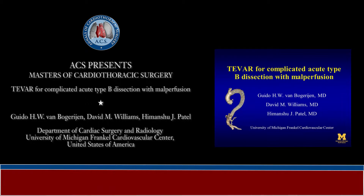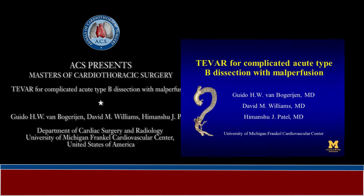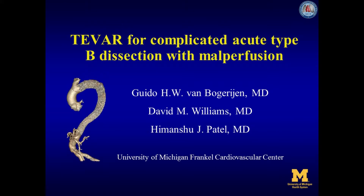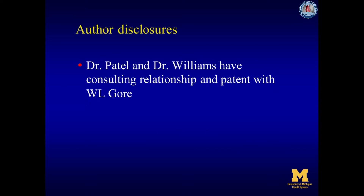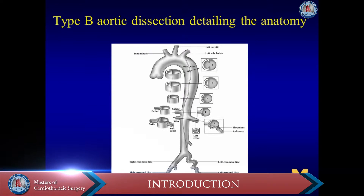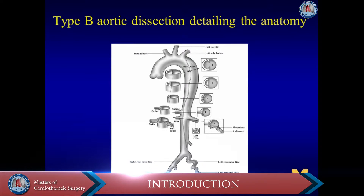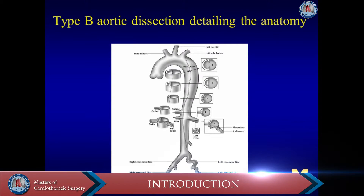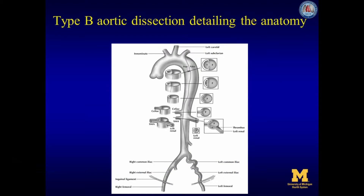We present how complicated acute type B aortic dissection with malperfusion is managed in our institution with thoracic endovascular aortic repair. Dr. Patel and Dr. Williams have a consulting relationship and patent with Gore. First, we will describe the management of acute type B dissection and malperfusion with figures of the different steps. Secondly, we will describe a case of a patient with acute type B dissection with malperfusion.